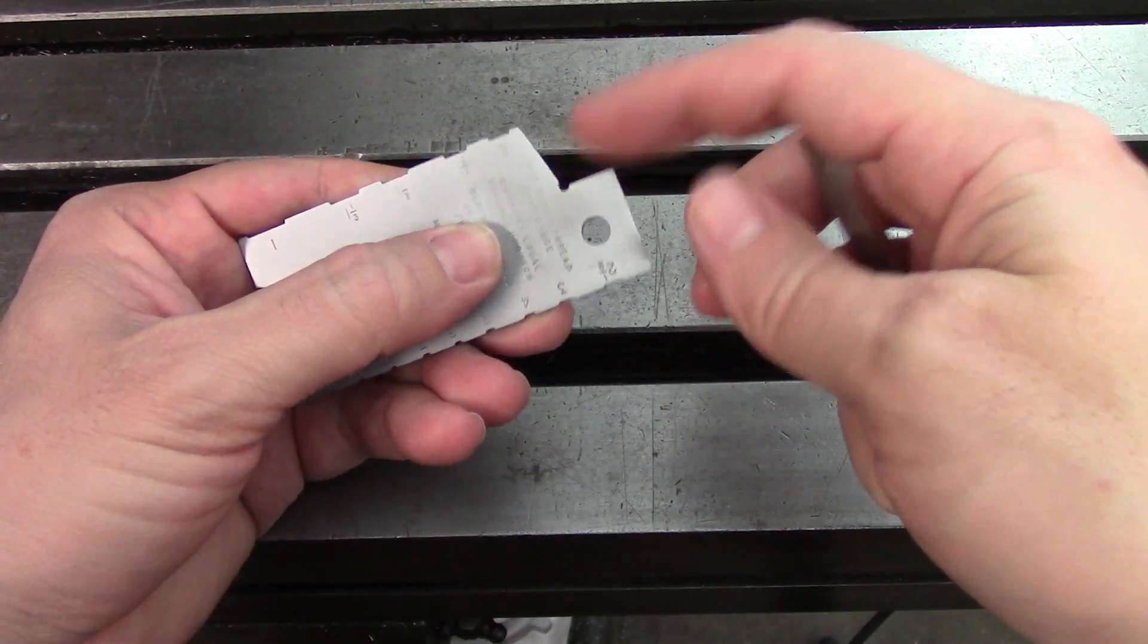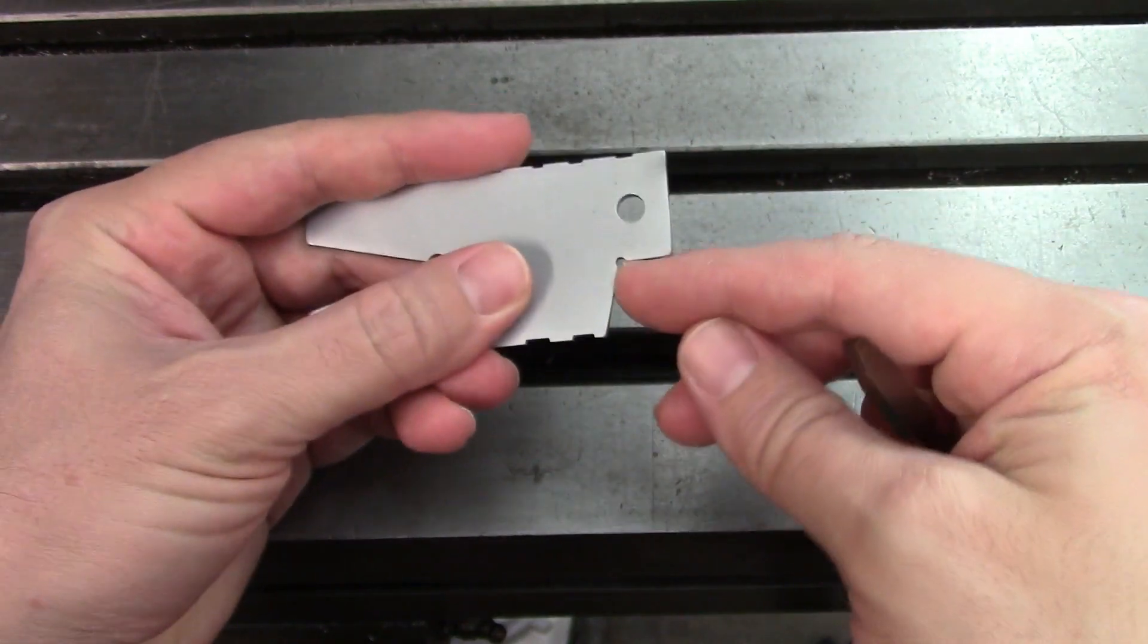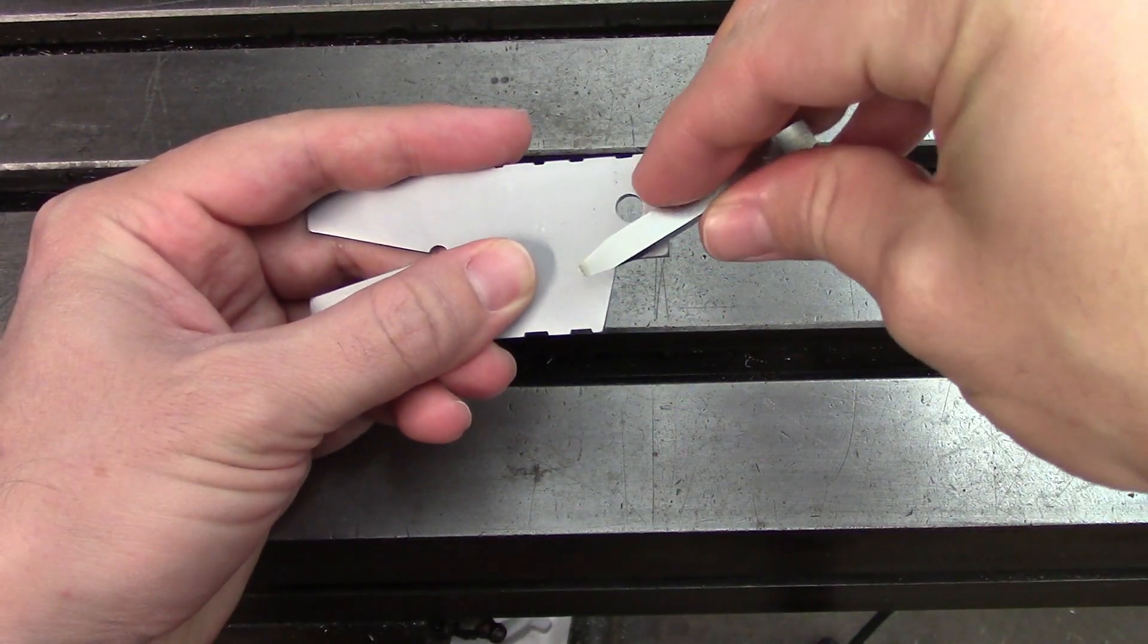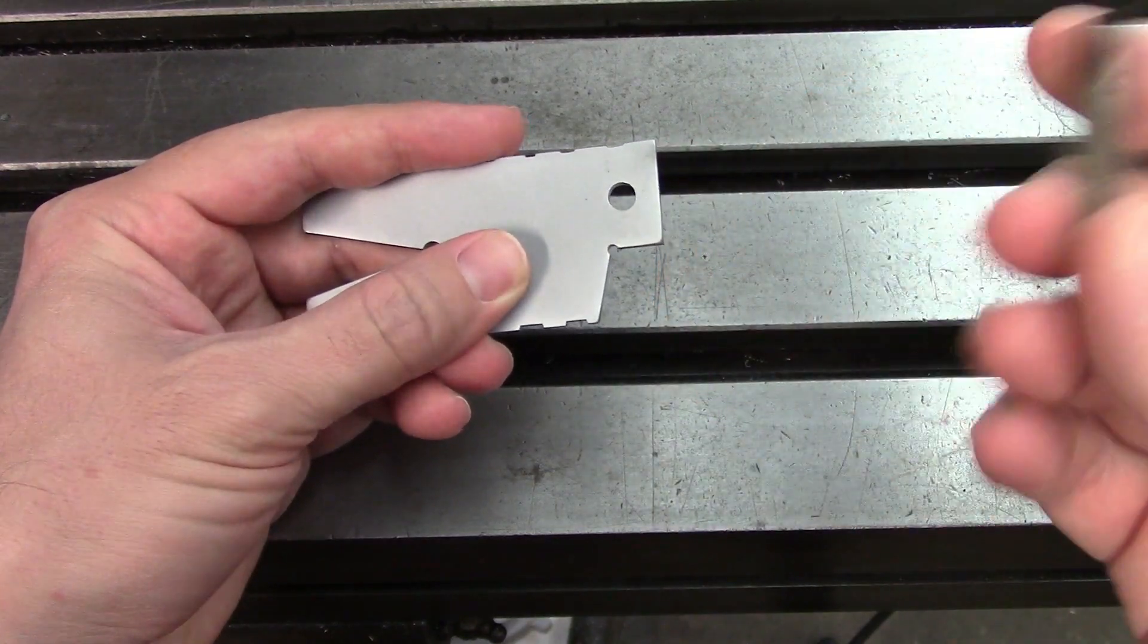This notch here is used when you're grinding to make sure that your flat is aligned to the angle to make sure that it's not too far that way or that way. That's very important.